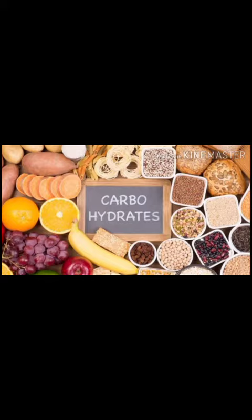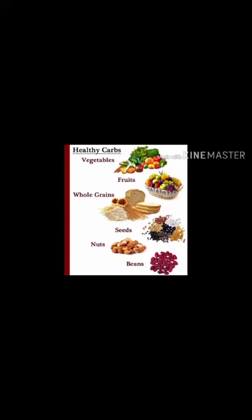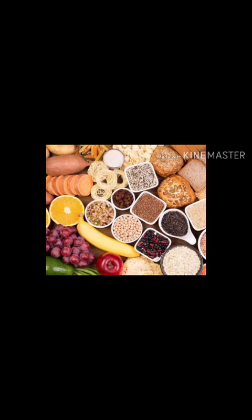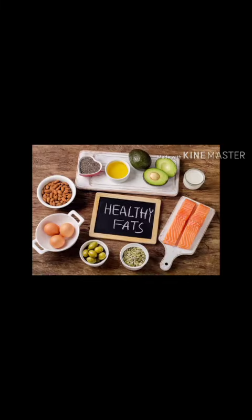Now let's classify food on the basis of the functions performed by them. The first is carbohydrates, or energy-giving food. It gives us energy to perform different activities. Foods like rice, wheat, maize, sugar, potatoes, honey, and sugarcane are the main sources of carbohydrates.